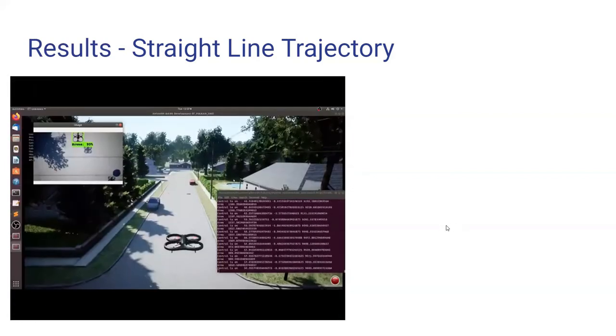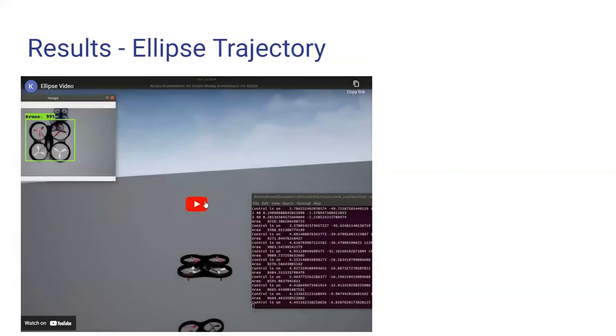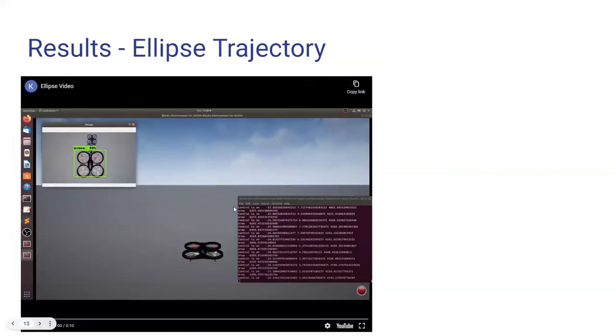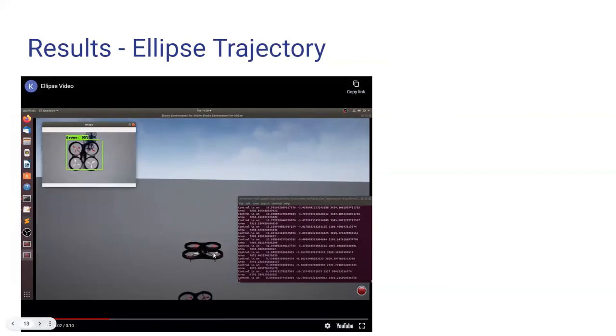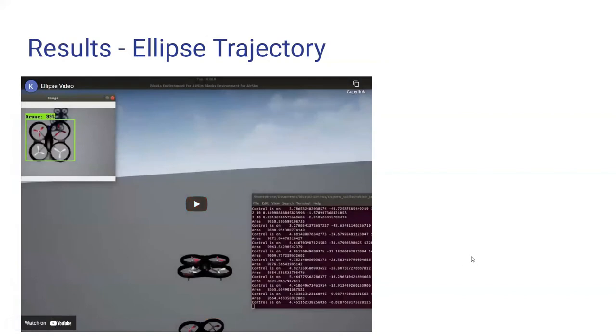And similarly, here you could see in the next video, you could see the ellipsoidal trajectory-based landing in which the agent UAV is following the base UAV while the base UAV is executing the ellipse trajectory. And once it's at the perfect place, it's going to do the descent and then the landing.